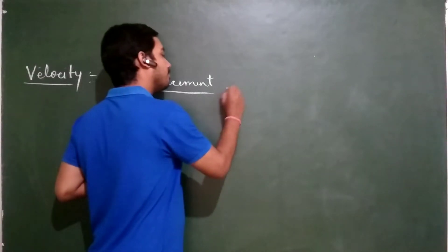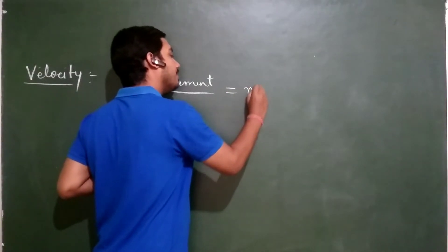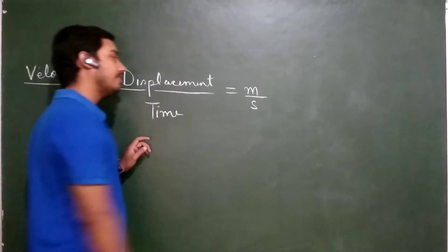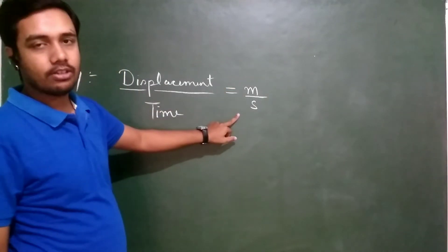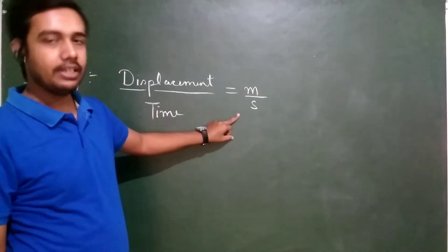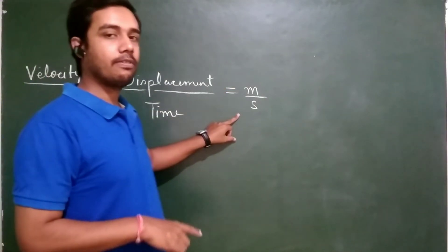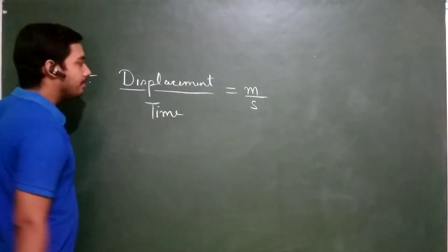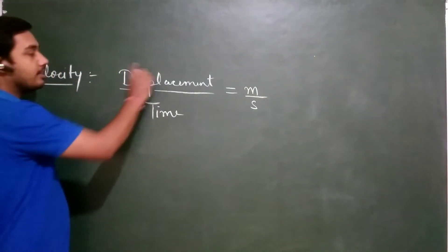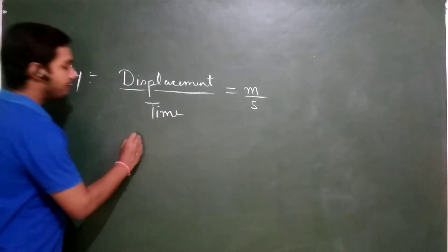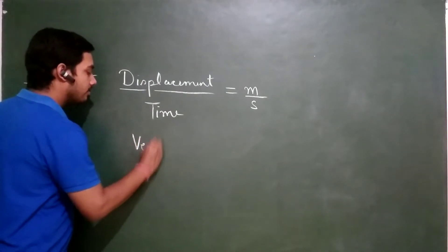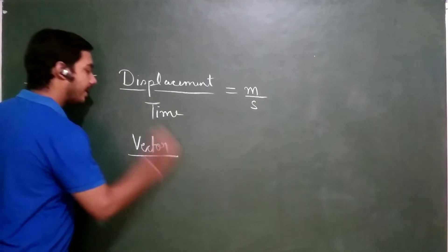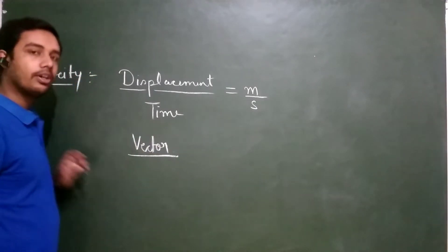The unit of displacement is metre and unit of time is second, so the SI unit of velocity is metre per second — the same as that of speed. Since displacement is a vector quantity, velocity is also a vector quantity.